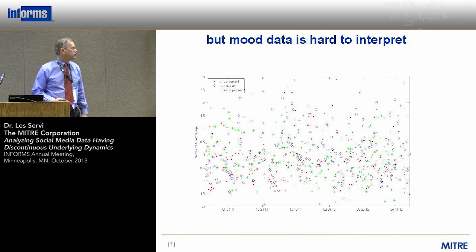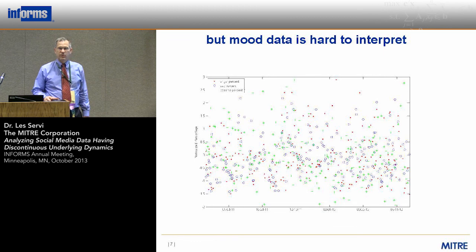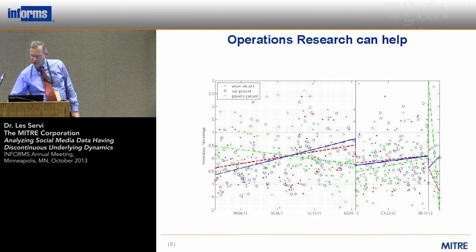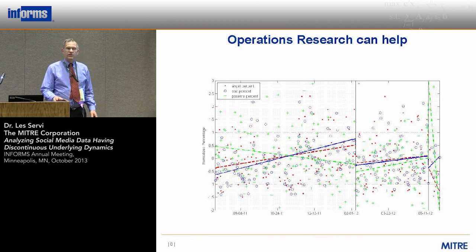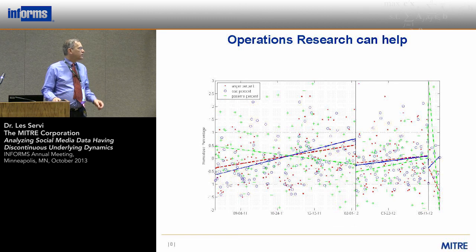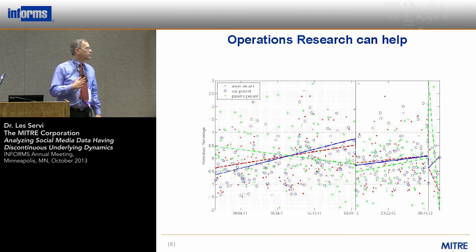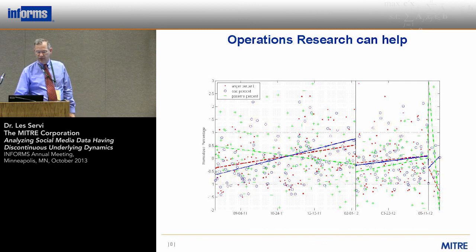The problem is it's very hard to make sense out of this graph. The data's there, but it's extremely noisy. Thankfully, operations research and analytics can help. I developed a new algorithm which basically takes this data and identifies dates in which there's a discontinuous change in emotions, as well as trying to interpret what is the pattern of the different emotions in these different regions.